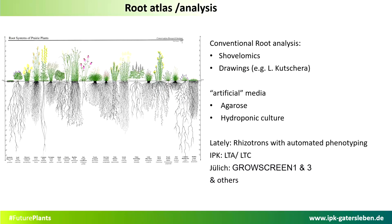Up to now, or in history, root phenotyping was done by shovelomics and drawings, and most phenotyping was done above ground. Lately, with increasing technical potential, we are now able to investigate the roots. In the last years, this was possible using artificial media such as agarose or hydroponic cultures. More recently, this improved by using real soil and investigating root growth by detecting roots in soil — and therefore we are using the risotron system.